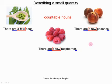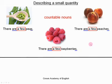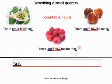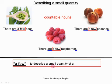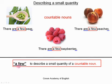This gives us our first rule: we use 'a few' to describe a small quantity of a countable noun. So if the noun is a countable noun, we must only use 'a few.' We do not use 'a little' with countable nouns.